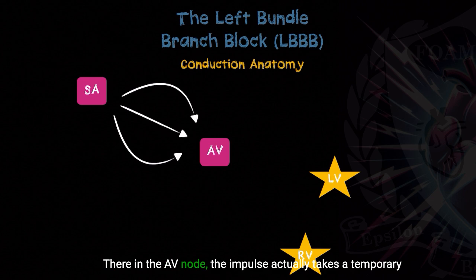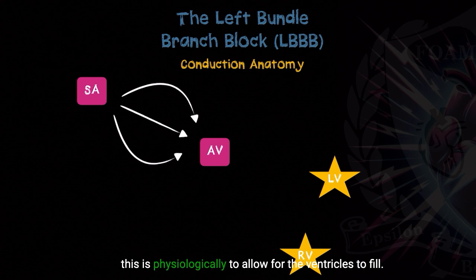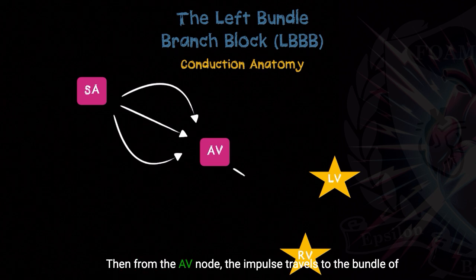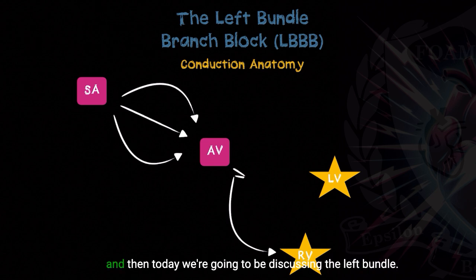There in the AV node, the impulse actually takes a temporary pause. That's the PR interval on the 12-lead EKG, and this is physiologically to allow for the ventricles to fill. Then from the AV node, the impulse travels to the bundle of His, and from there you split into the right bundle, and today we're going to be discussing the left bundle.